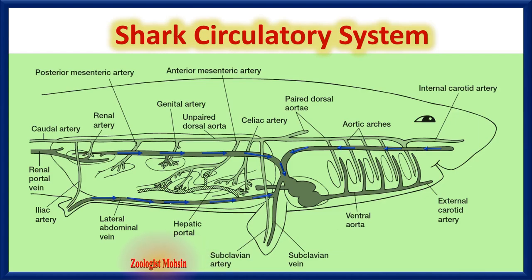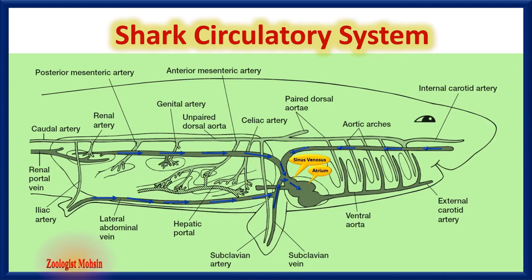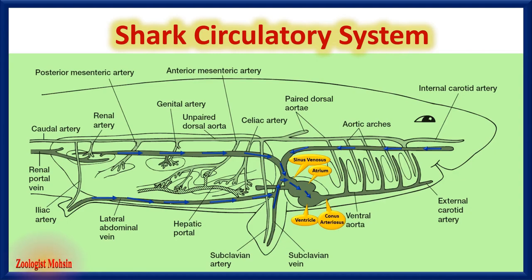These veins supply blood to the sinus venosus. In all fishes, sinus venosus has valves which open when it is filled and stop the backflow of blood. When the sinus is filled, blood enters the atrium, which is a pump and pushes blood to the next chamber — the ventricle. When the ventricle contracts, it forces blood toward the conus arteriosus, which is comparatively small in sharks.